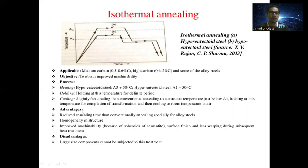Advantages of isothermal annealing: it reduces annealing time compared to conventional annealing, especially for alloy steels; provides homogeneity in structure; improved machinability due to spheroids of cementite; better surface finish; and less warping during subsequent heat treatment. The disadvantage is that large size components cannot be subjected to this treatment.